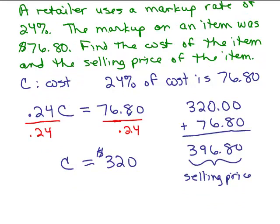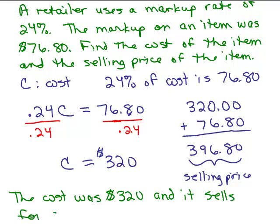So when all is said and done, what's the answer here? It says find the cost of the item and the selling price of the item. So the cost was $320 and it sells for $396.80 and there we go.